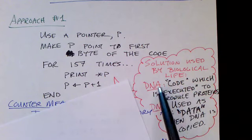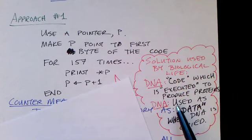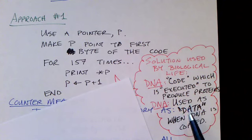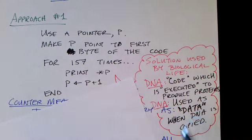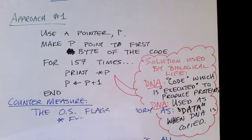In one use, it's executed as code. The DNA contains information about how to build proteins, and the proteins then are what the cell is made out of, more or less. So the DNA is executed to produce the proteins, much like code is executed in a computer. And the second way DNA is used, is it's used as data. During cell replication, a copy of the DNA strand is made. So biological life uses something more or less like this.